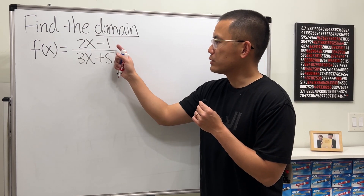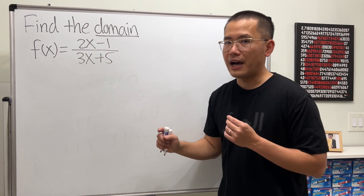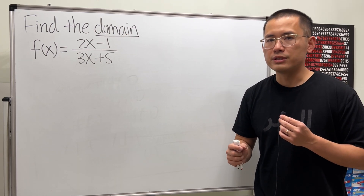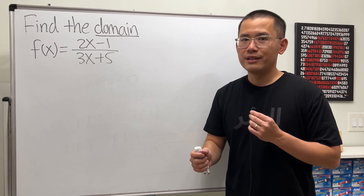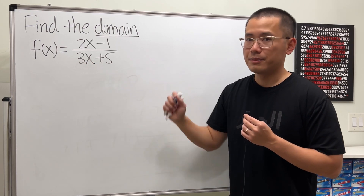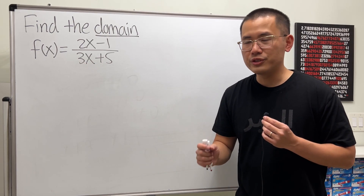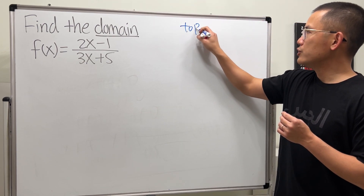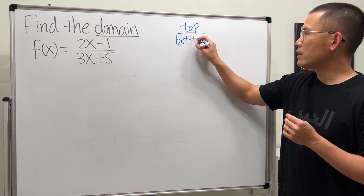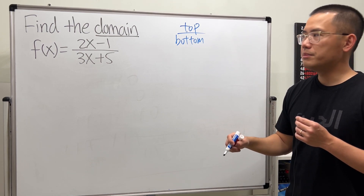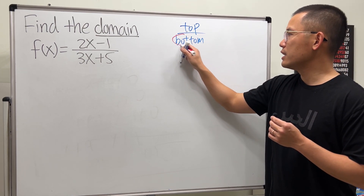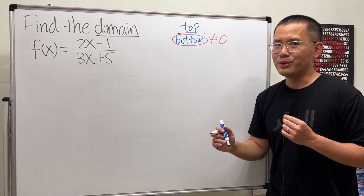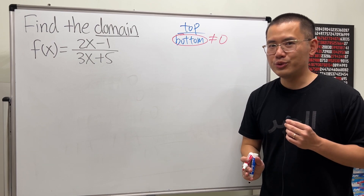For the first one, we have 2x minus 1 over 3x plus 5. The domain is a set of all possible x values that we can use for the function. But here, we have 3x plus 5 on the bottom, so there's a restriction whenever we have a rational function. In general, if we have something on the top over another expression on the bottom, keep in mind we cannot divide by 0. So we have to make sure the bottom is not equal to 0, and that's how we set up the restriction on x.